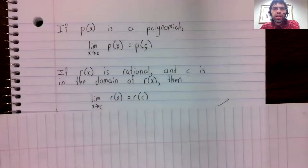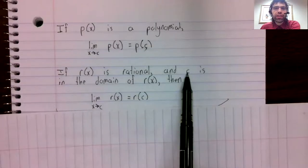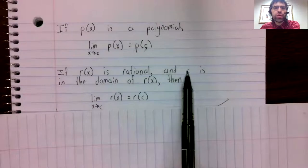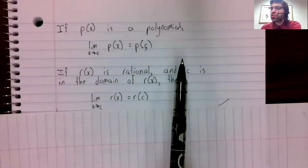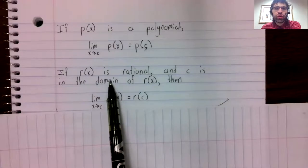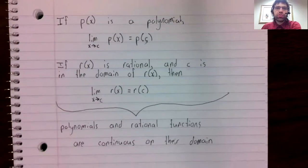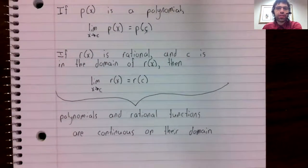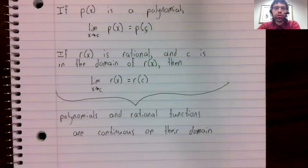The same thing is true of rational functions, as long as sticking C into the rational function doesn't give you a division by zero error. That is to say, as long as C is in the domain of the rational function. We can now state these facts compactly: polynomials and rational functions are continuous on their domains.